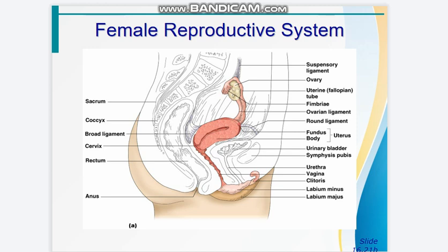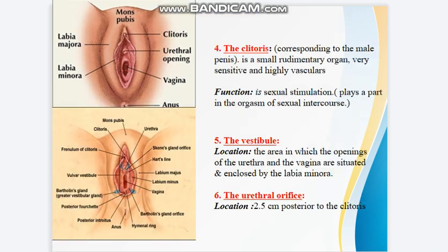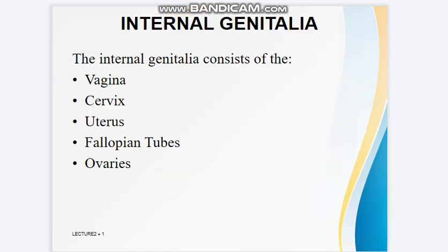We have the external genitalia and the internal genitalia. The external genitalia consists of the mons pubis, the labia majora, the labia minora, the clitoris, the urethral opening, and the hymen. The hymen is a thin membrane which tears during sexual intercourse. It has one or more openings to allow escape of menstrual blood.